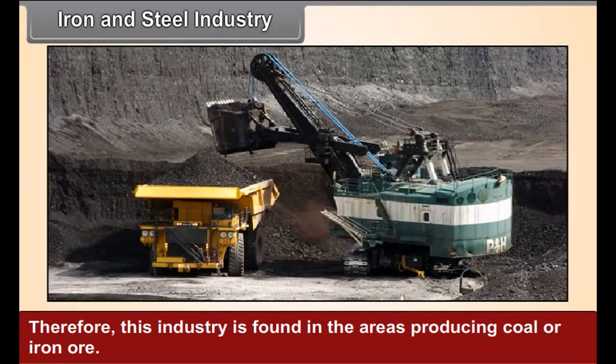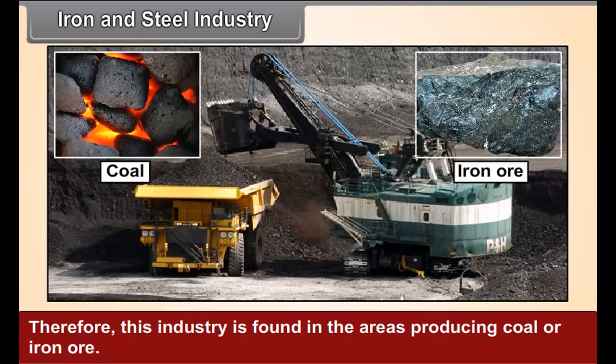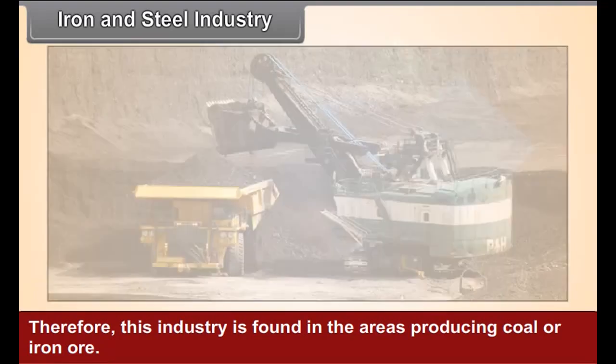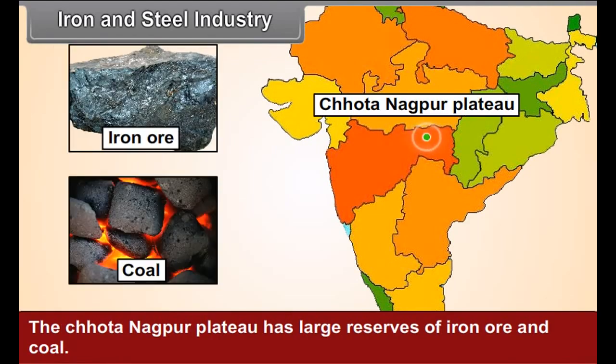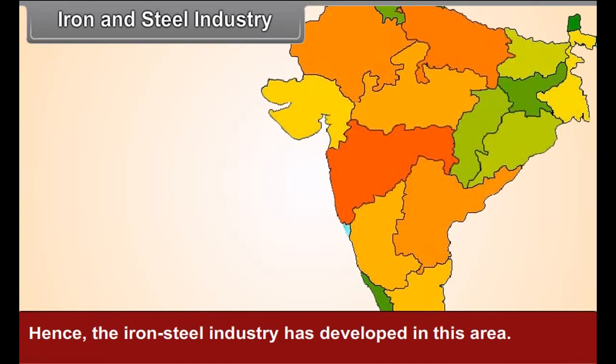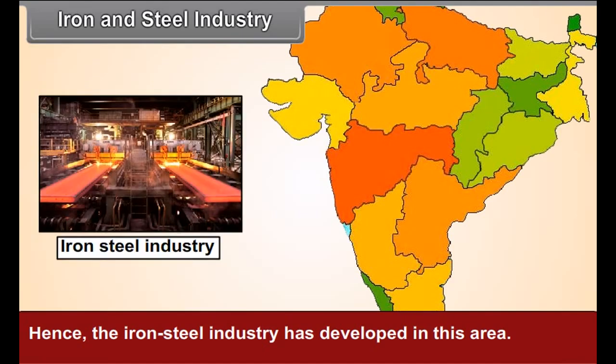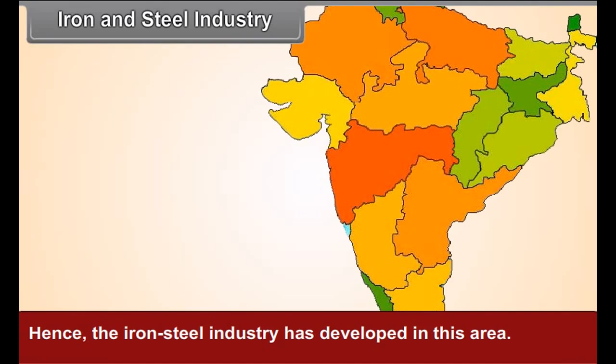Therefore, this industry is found in areas producing coal or iron ore. The Chhota Nagpur plateau has large-scale reservoirs of iron ore and coal. Hence, the iron and steel industry has developed in this area. Try to understand how the iron and steel industry came to be located at Jamshedpur in India from figure 14.1.